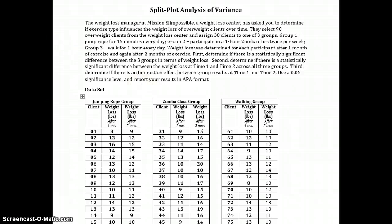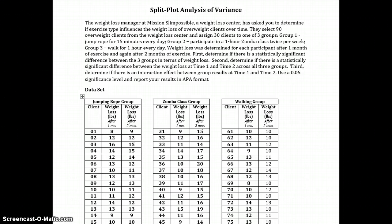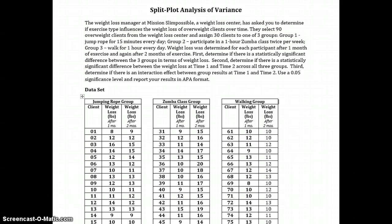The problem. The weight loss manager at Mission Slim Possible, a weight loss center, has asked you to determine if exercise type influences the weight loss of overweight clients over time. They select 90 overweight clients and assign 30 clients to one of three groups: Group one, jump rope for 15 minutes every day; Group two, participate in a one hour Zumba class twice per week; Group three, walk for one hour every day.